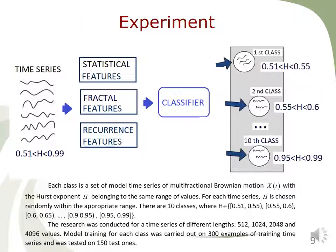In the experiment, model time series of multifractional Brownian motion were generated. We had 10 classes with different ranges of Hurst exponent. For each time series, the Hurst exponent was chosen randomly inside the given class range. Statistical, fractal, and recurrence characteristics for every time series were calculated and used as inputs to the classifiers.